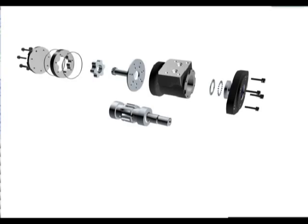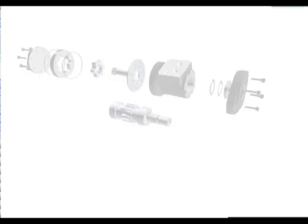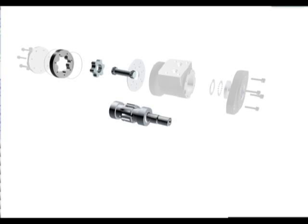A gerotor motor has an orbital internal gear system. The main components of the gerotor motor include the stator that is an internal gear, the rotor which is an external gear, the drive coupling, an output shaft, a rotary valve that is often incorporated into the output shaft, and the housing.